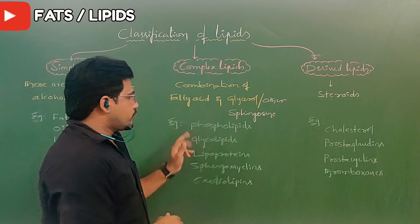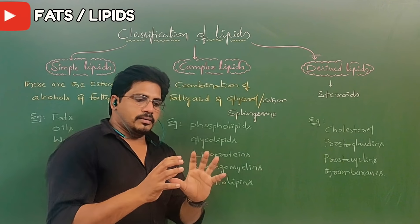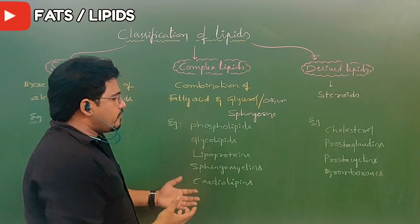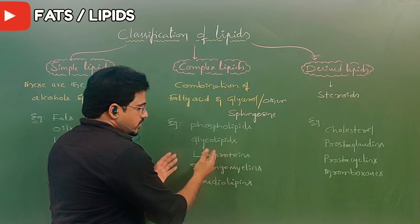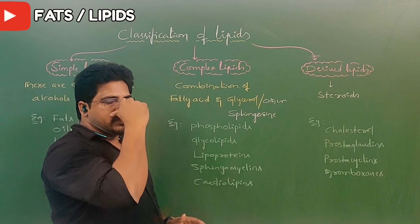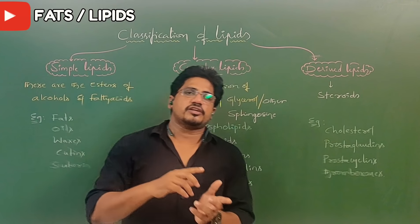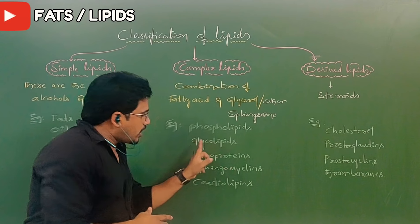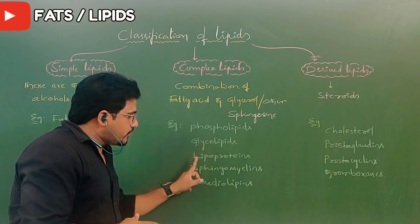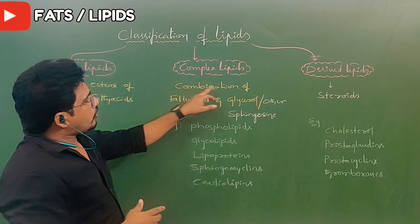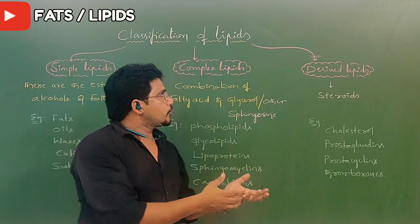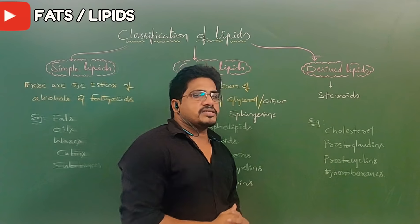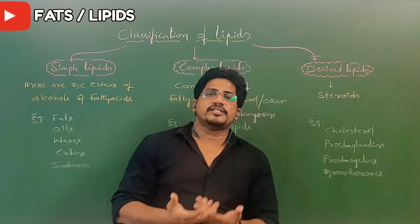Phospholipids, glycolipids, lipoproteins, sphingomyelins, and cardiolipids — all these are categorized under complex lipids. Phospholipids are generally seen on cell membrane surfaces. Glycolipids are also present on cell membrane surfaces. Lipoproteins are combinations of lipids and proteins. Glycolipids are combinations of carbohydrates and lipids, and lipoproteins are combinations of lipids and proteins.